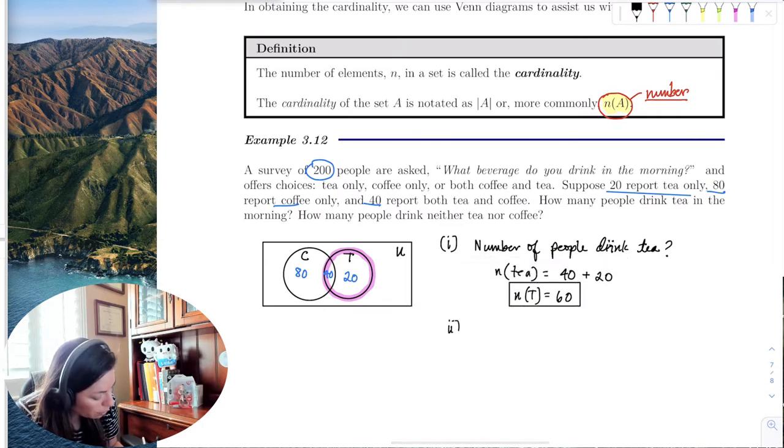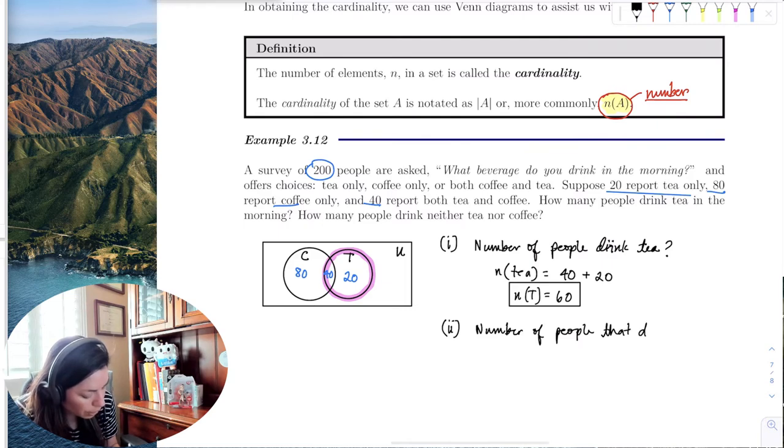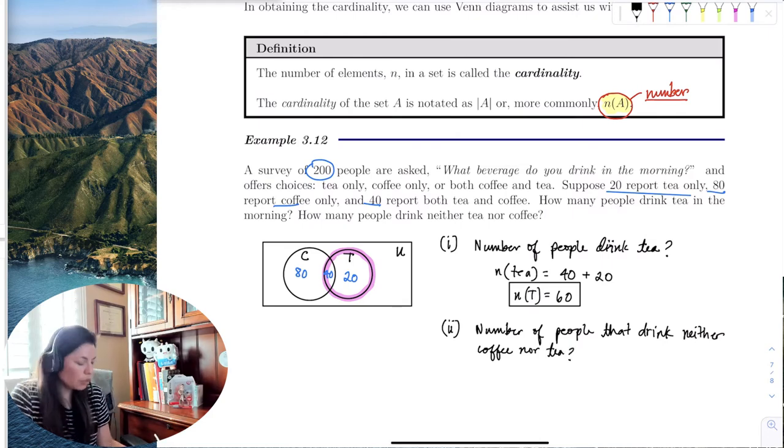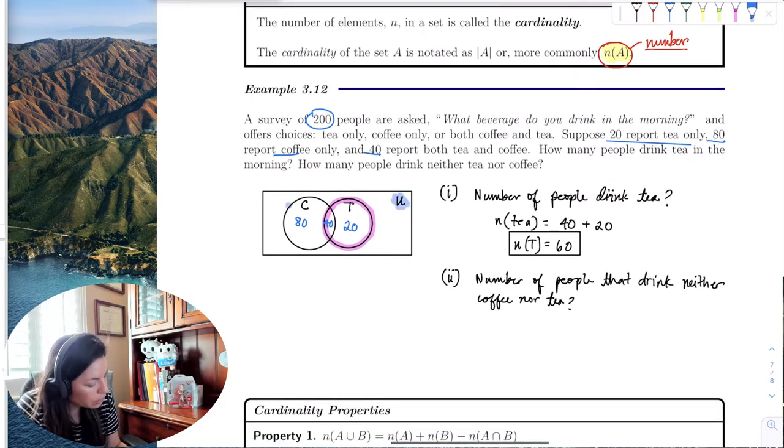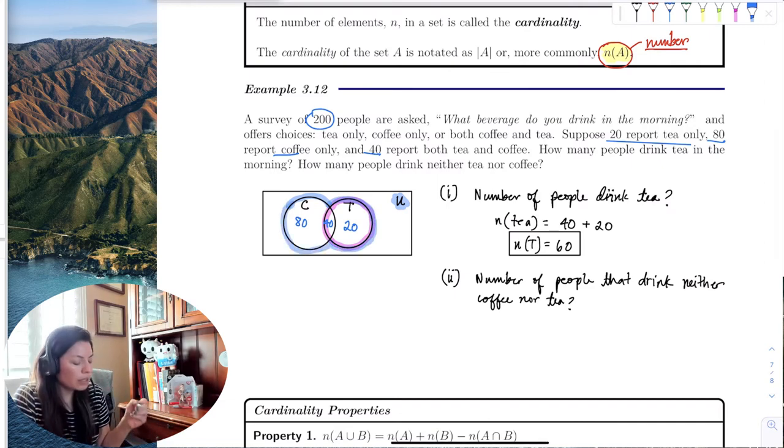The second part is finding the number of people that drink neither coffee nor tea. Well, if they're not drinking coffee or tea, then that means they're drinking something else like orange juice and protein shake. And in fact, it's going to be somewhere out here in the universal set. So it's going to be everything but in this sets of coffee and tea.